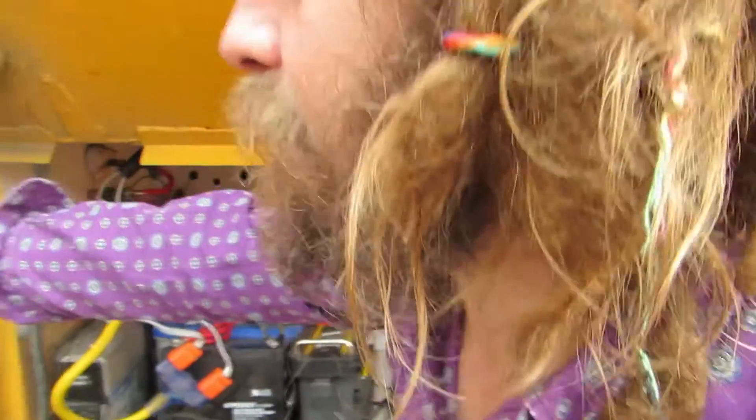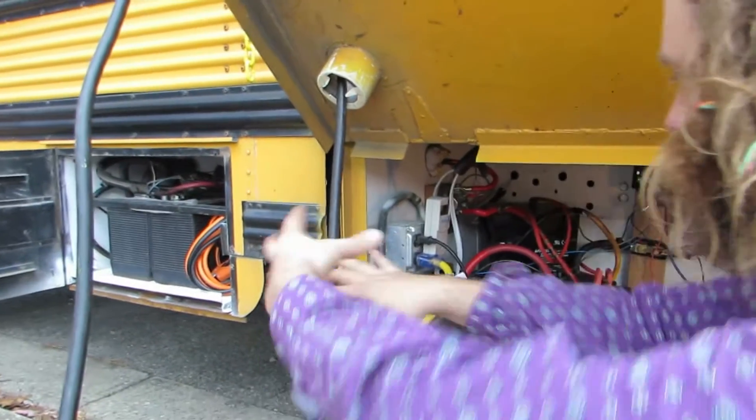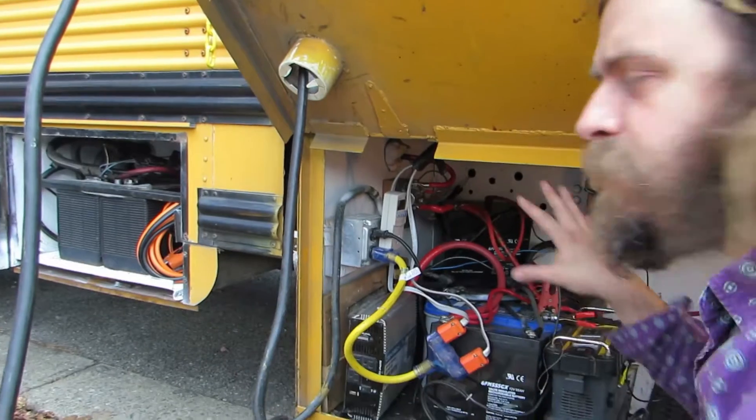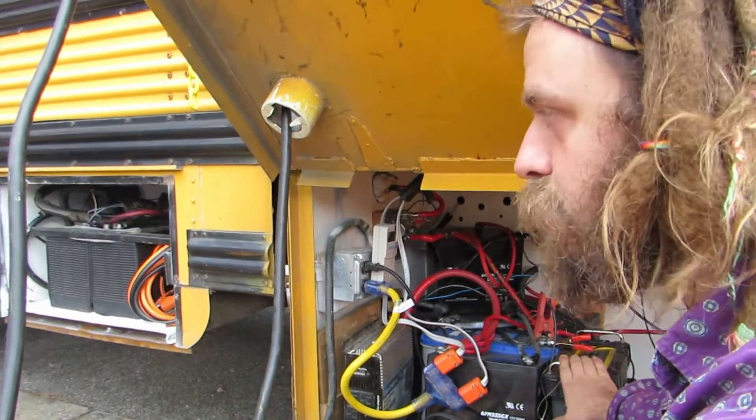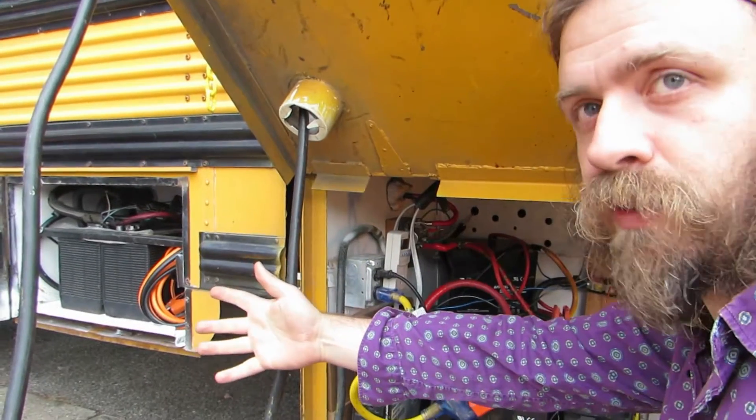Now, the road batteries, when the bus is sitting here off, the road batteries are disconnected from the house batteries. This means that we can use our house batteries and discharge them, and the next time we go to turn the key in the bus, our road batteries will still be full.